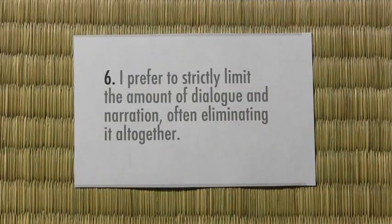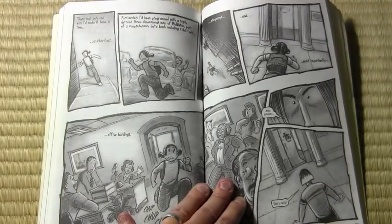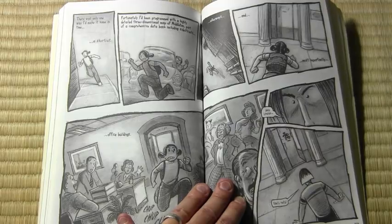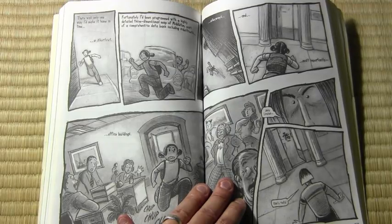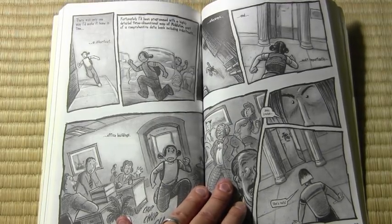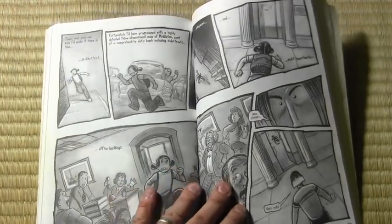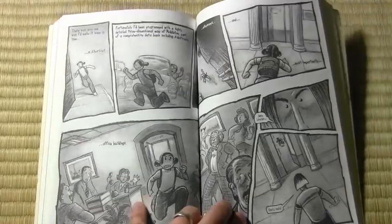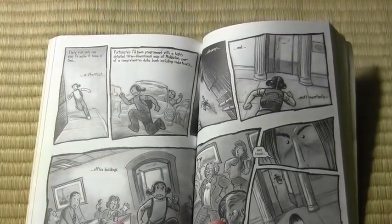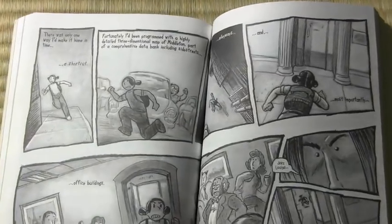Number six: I prefer to strictly limit the amount of dialogue and narration, often eliminating it altogether. To be more accurate, these days I prefer to limit narration and dialogue. That was not always the case. Back in my Akiko comic book days, I had a story about the Akiko replacement robot who was on the run from a guy named Jimmy Hampton chasing after her.